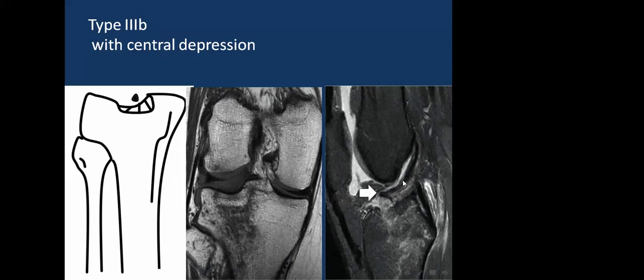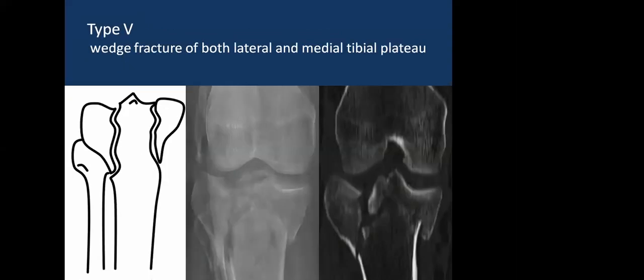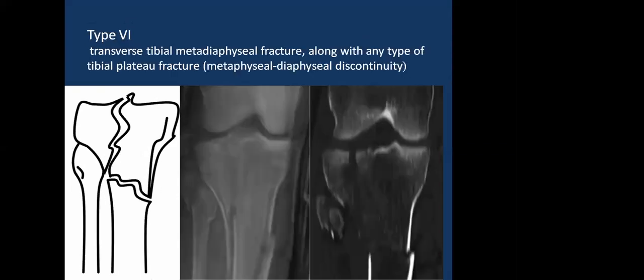Type 3 may be accompanied by avulsion of the ACL. Type 4 involves the medial tibial plateau, a higher-force injury with either split or depressed component. Type 5 is a combination of both lateral and medial plateau fractures. Type 6 is a combination of any previously mentioned type with metaphyseal-diaphyseal discontinuity.